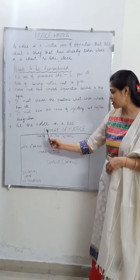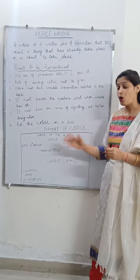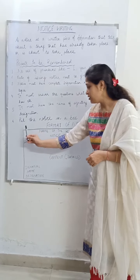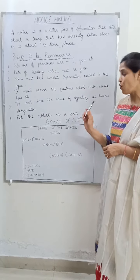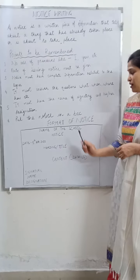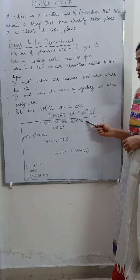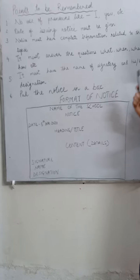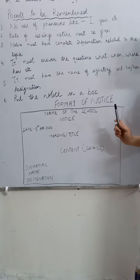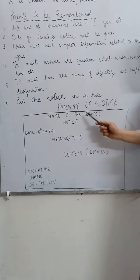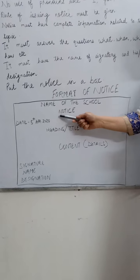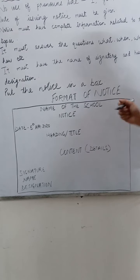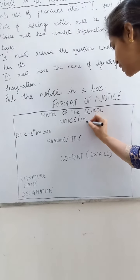Now see the format of a notice — this is how you are going to write a notice. First of all, you have to make a box because it should always be enclosed in a box. Then on the very top of the box, you have to write the name of the school, institution, or corporate office that is issuing the notice. The very next line, you have to write the word NOTICE — N-O-T-I-C-E.